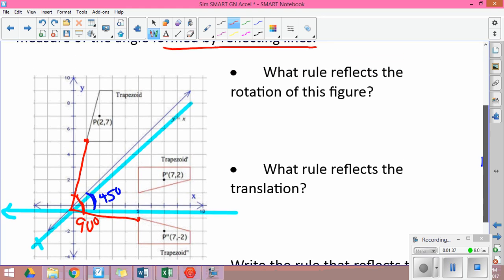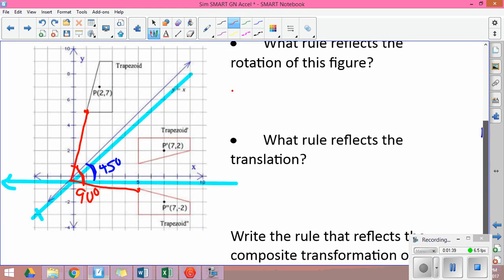So when we look at what rule reflects the original reflection, to go from P to P prime, we reflected over y equals x.